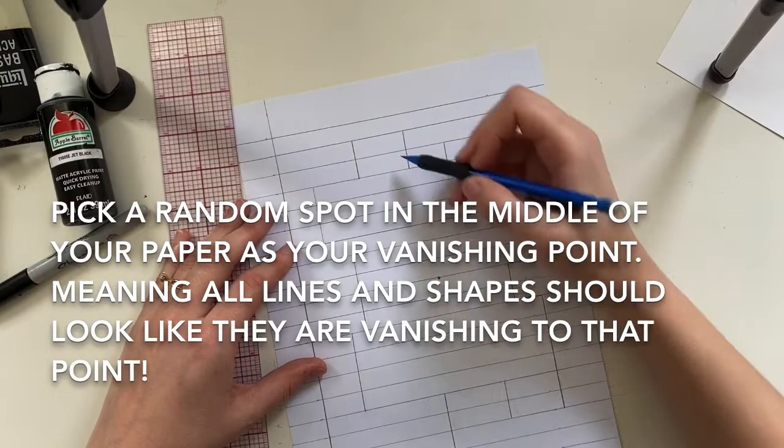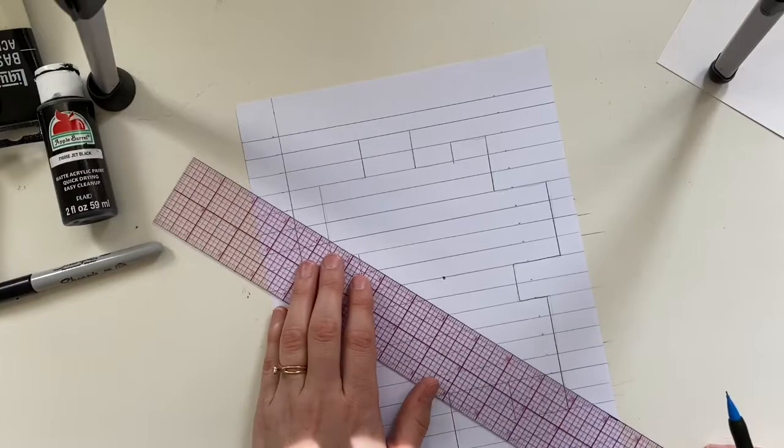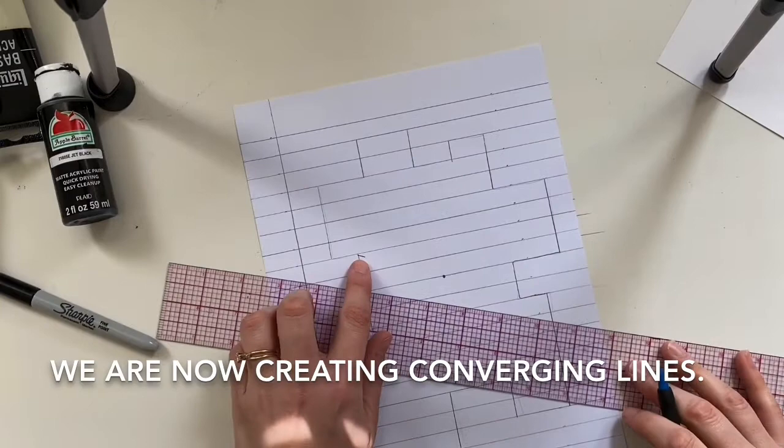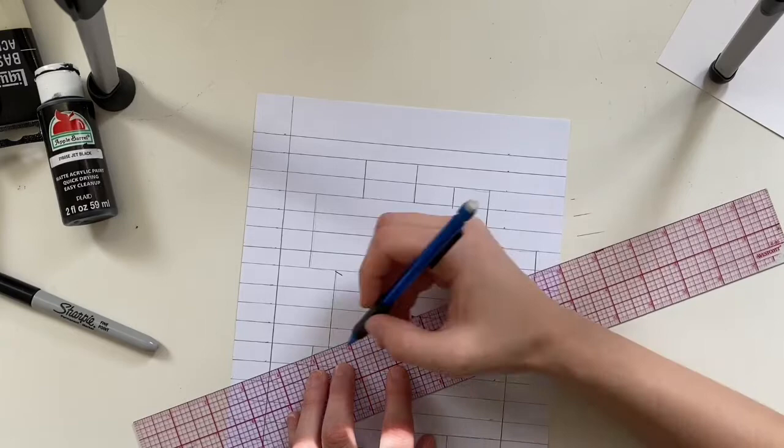Okay, so now we're going to work on creating our angles to create a 3D aspect of our paper. So that little dot I put in the center, that's going to be our vanishing point. We're then going to go to any 90 degree angle, put our ruler at the 90 degree angle and point it to that vanishing point. See how I'm lining those up?